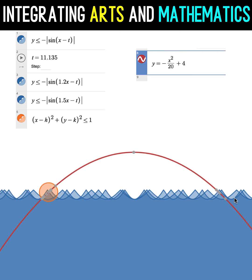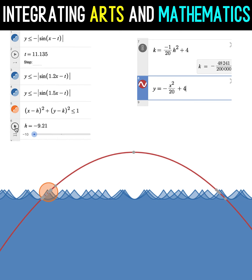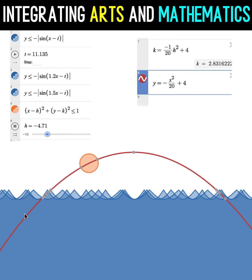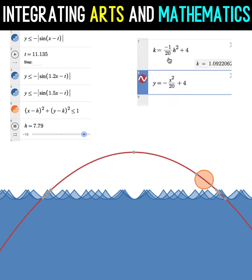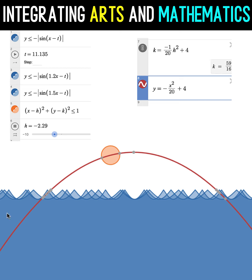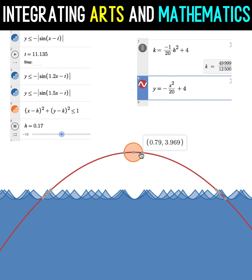Then, in order to move this sun going to the right, we are going to vary the value of the h in this equation. So if I change the value of h, it will create now this motion. The y value is controlled by this equation: negative 1 over 20 h squared plus 4, which is now this path. And the x value is determined by the value of h. So together, that will move this circle following this path as if you have a rising and a setting sun.